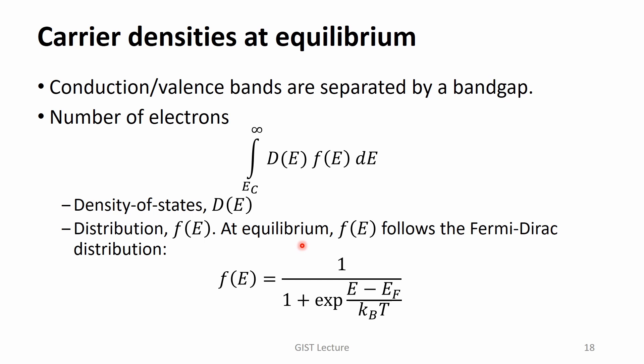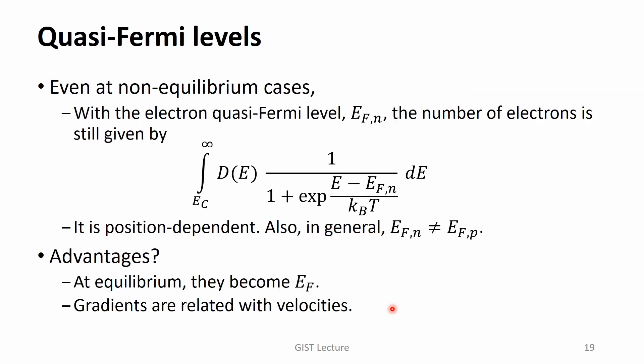At equilibrium, the distribution function follows the Fermi-Dirac distribution. Here, EF means the Fermi level. The Fermi level describes the energy up to which states are fully filled. It is very useful. So, we wanted to use it even at non-equilibrium cases.